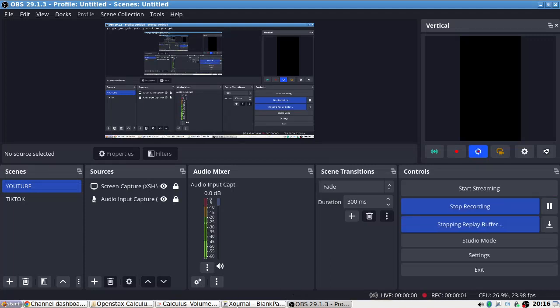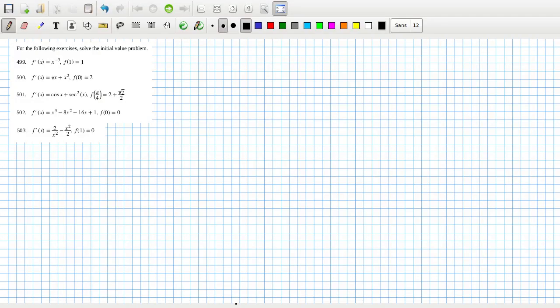Okay, let's continue here. Problem 499: if we anti-differentiate, we'll get x power minus 2 over minus 2 plus c. I guess I should use the lowercase.